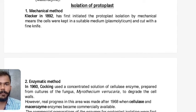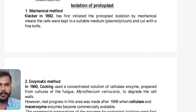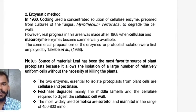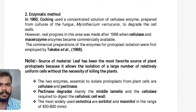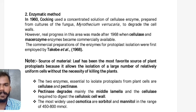Isolation of protoplast: There are two methods — mechanical and enzymatic. The mechanical method was first initiated by Klercker in 1892; cells were kept in a suitable medium called plasmolyticum and cut with a fine knife. In the enzymatic method, in 1960 Cocking used a concentrated solution of cellulase enzyme prepared from cultures of the fungus Myrothesium verrucaria to degrade cell walls. Real progress came after 1968 when cellulase and macerozymes became commercially available; commercial enzyme preparations for protoplast isolation were first employed by Takebi et al. in 1968.